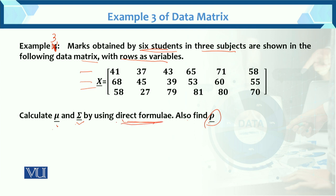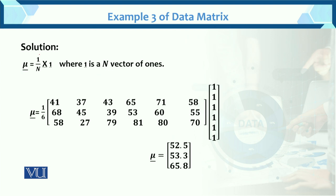The direct formula for the mean vector is: mu = (1/n) · X · 1, where X is the data matrix and 1 is a vector of ones of length n.